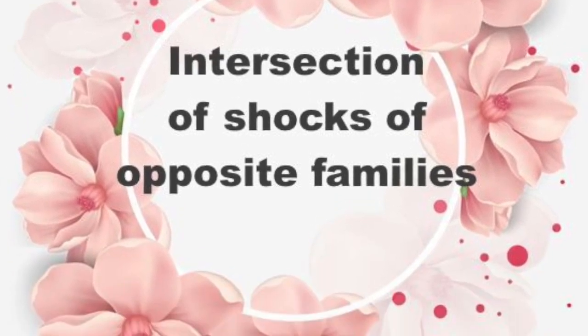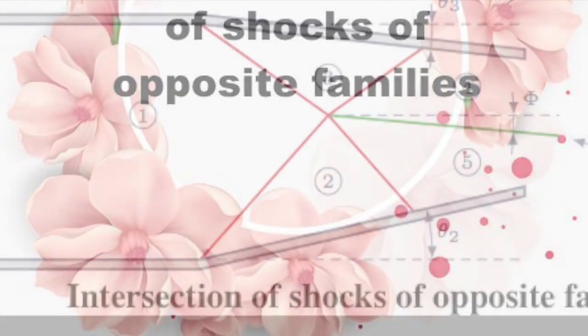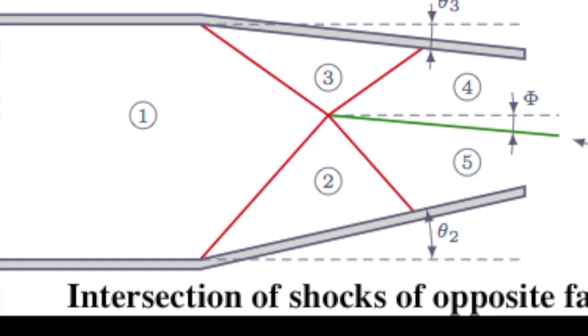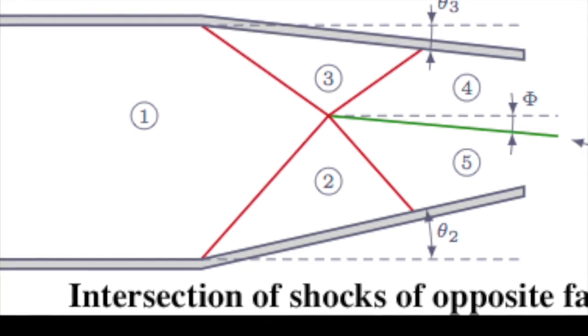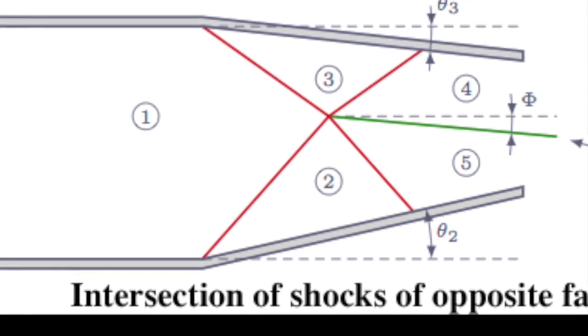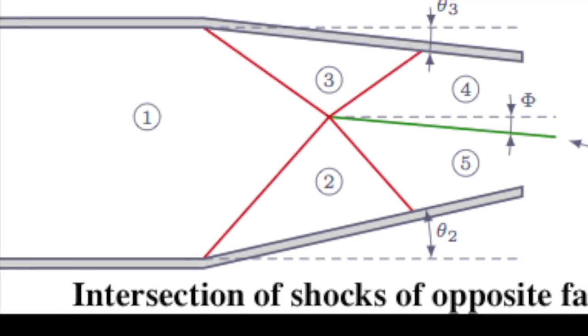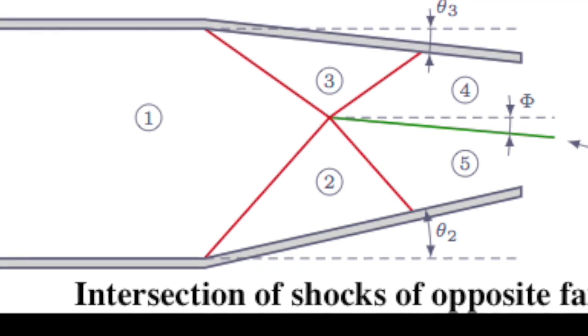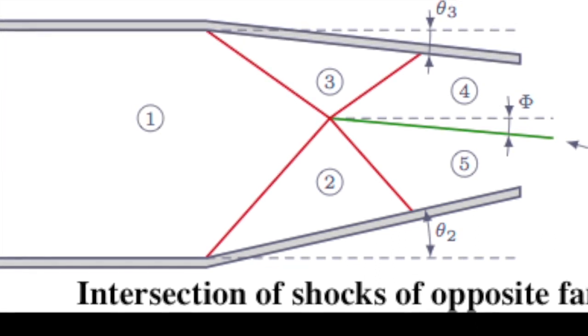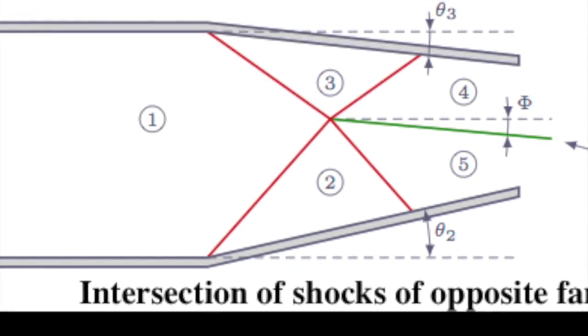Intersection of shocks of opposite families: Consider the intersection of left and right running shocks. Both are incident shocks and correspond to deflection theta 2 and theta 3 respectively. These shocks continue as the refracted shocks C and D downstream of the intersection at point E.